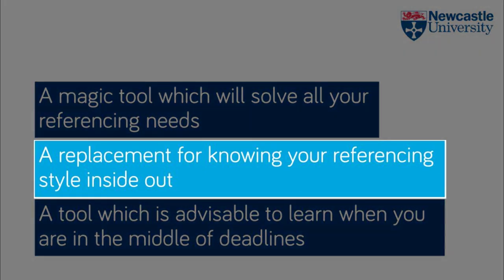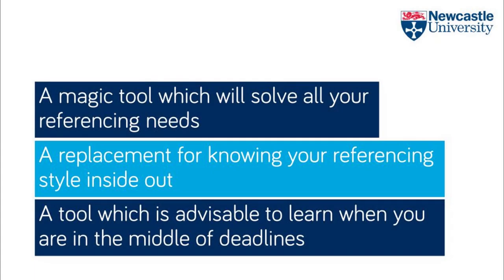Leading on from this, it is not a replacement for knowing your referencing style inside out. There are many reasons why information may be entered wrongly into EndNote, which will mean it produces in-text citations and references that simply don't match your requirements. You need to make it your mission to get to know the guidelines of your referencing style and be on your guard, double checking every EndNote reference in both your library and also when it is inserted in Microsoft Word at the writing up stage. If you need to learn more about your referencing style, then check out our referencing guide on the library website.